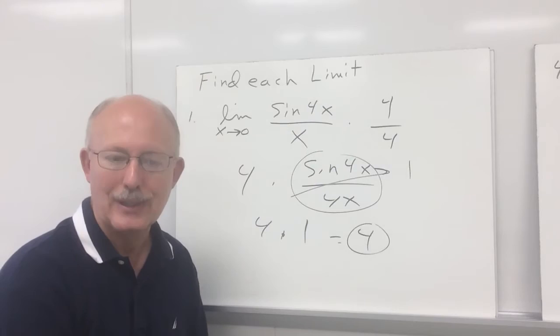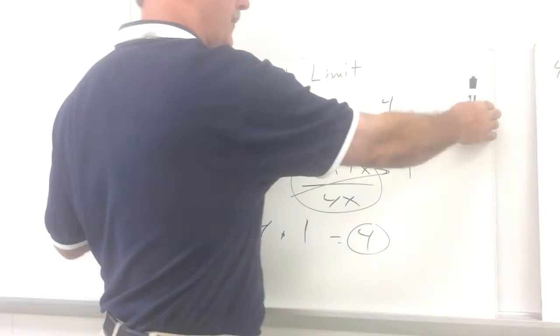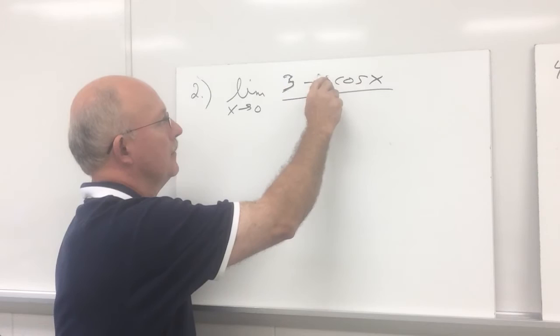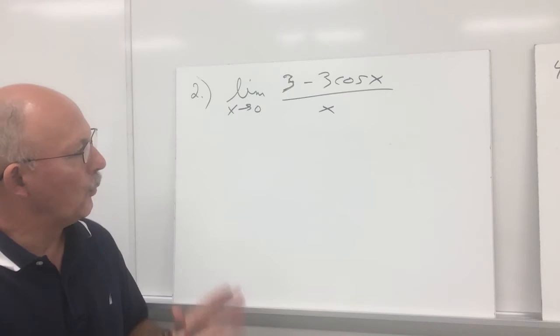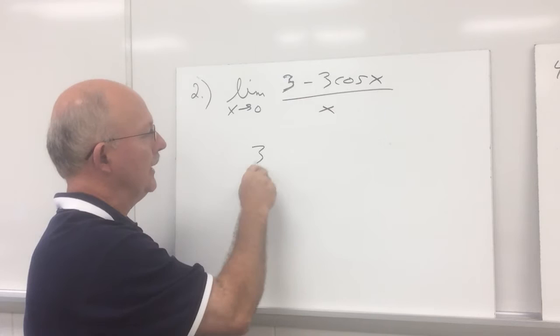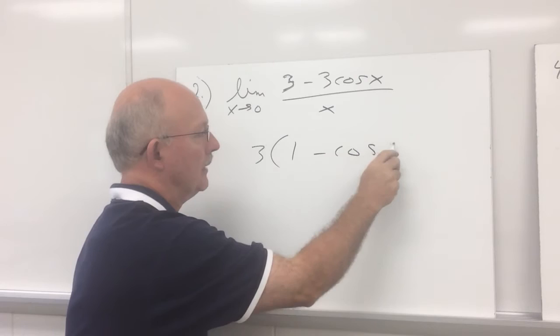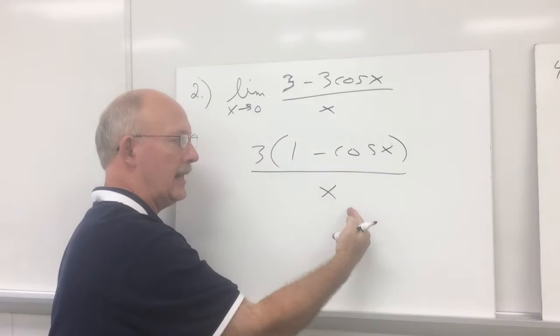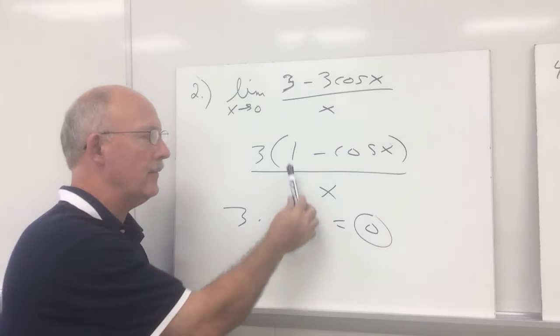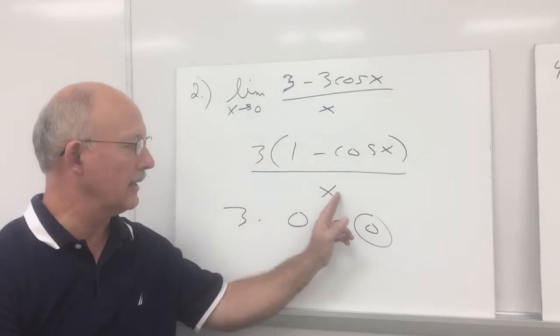Let's try problem number 2. We've got the limit as x approaches 0 of 3 minus 3 cosine x over x. I can almost see 1 minus cosine x over x. In the numerator, I'm going to factor 3 off each term, giving us 3 times 1 minus cosine x over x. Can you see 1 minus cosine x over x? That's 0. So we end up with 3 times 0, which is 0. The limit as x approaches 0 of 1 minus cosine x over x is 0, so 3 times 0 gives you 0.